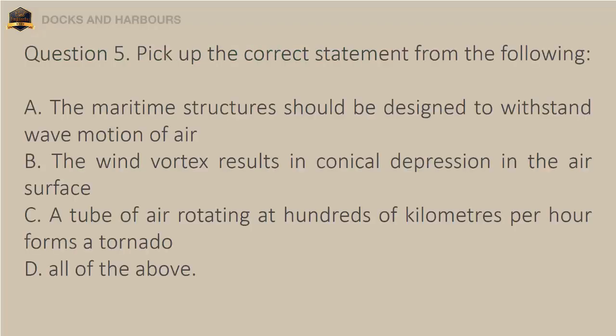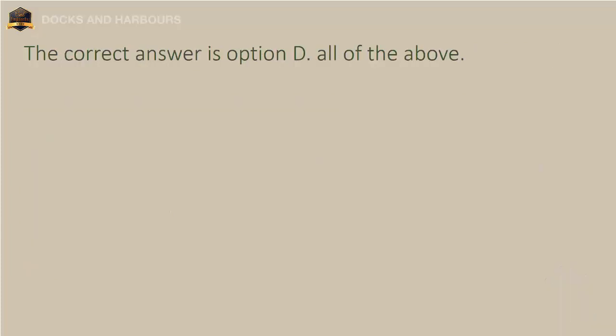Question 5. Pick up the correct statement from the following. A. The maritime structure should be designed to withstand wave motion of air. B. The wind vortex results in conical depression in the air surface. C. A tube of air rotating at hundreds of kilometers per hour forms a tornado. D. All of the above. The correct answer is Option D: All of the above.